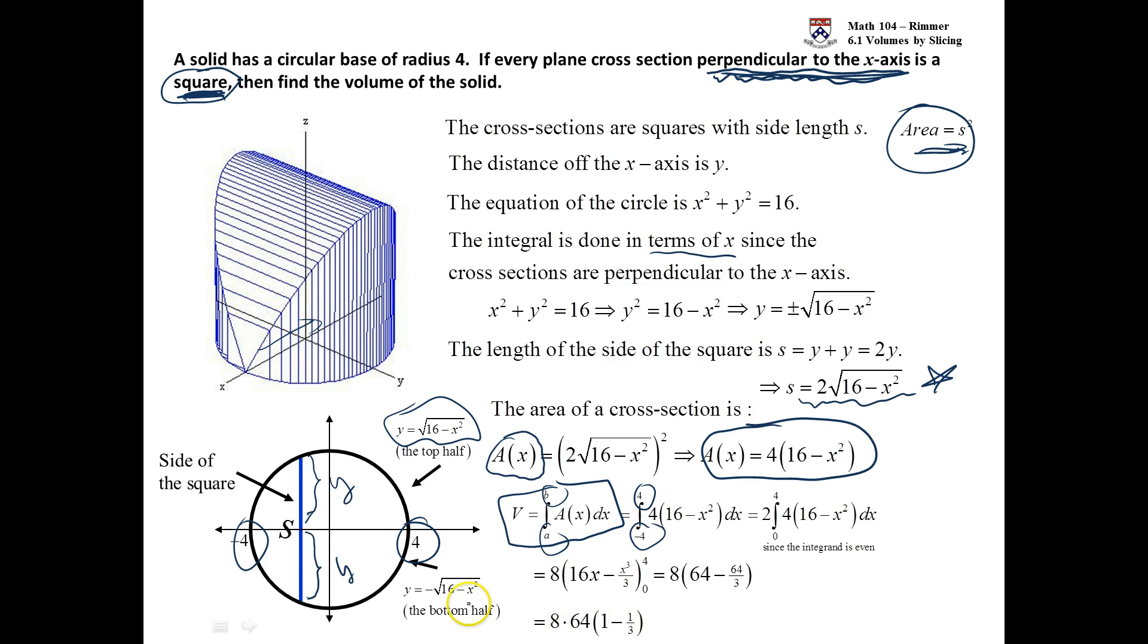Multiplying 8 by 64, we end up with 512. So, 512 times 2 thirds, we double the 512, we get 1024 over 3. That's the volume of this three-dimensional shape.